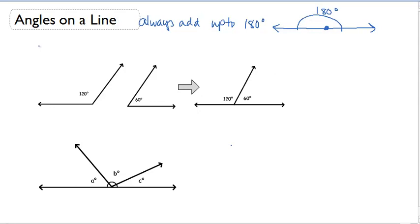Let's look at this first example. Here we have two angles that add up to 180 degrees. These angles are called supplementary angles.